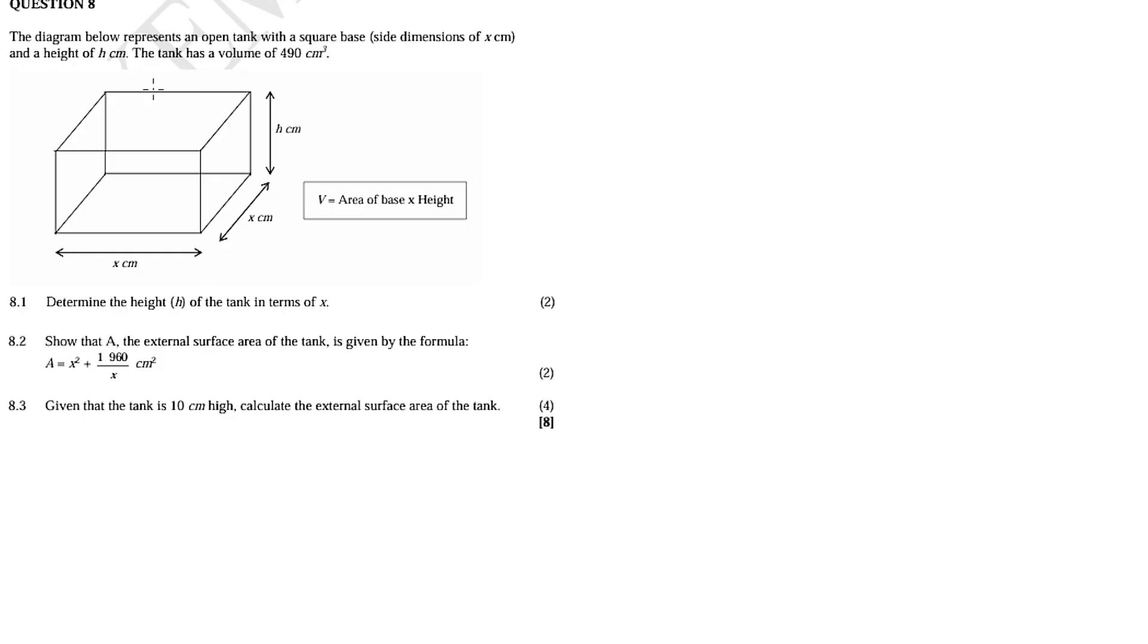The diagram below represents an open - keyword open - tank with a square base, meaning that the top part of this shape is not present, it's open basically. The base and then the side dimensions of the square are x centimeters and the height of h centimeters. The tank has a volume of 490 cubic centimeters. Okay, 8.1.